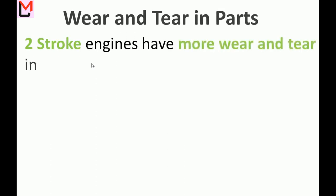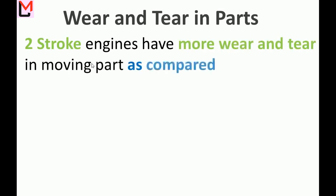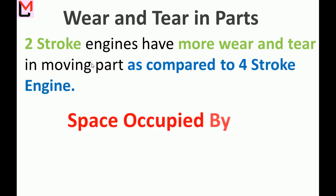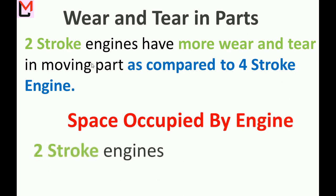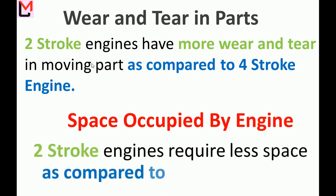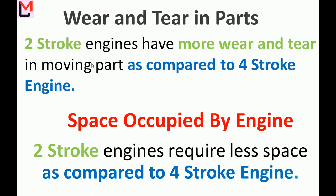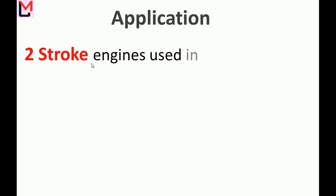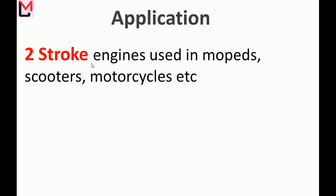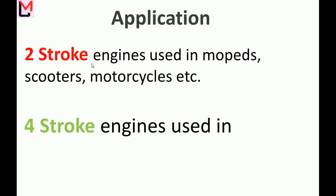Wear and tear: Two-stroke engines have more wear and tear in moving parts compared to four-stroke engines. Space: Two-stroke engines require less space. Applications: Two-stroke engines are used in mopeds, scooters, motorcycles, etc. Four-stroke engines are used in cars, buses, trucks, etc.